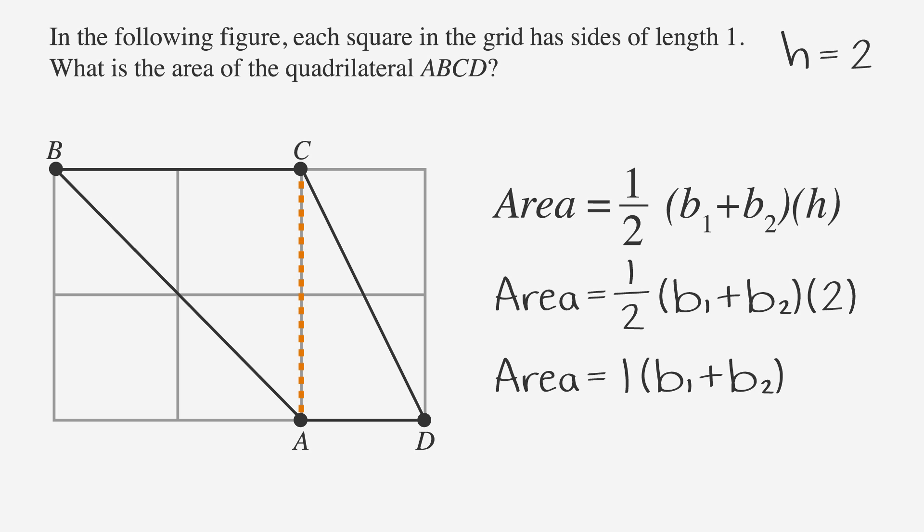We see that the bottom of the base is the length of the side of a square, so we know that it's equal to 1. The second base, line BC, is the length of the sides of two squares, so we can set that equal to 2.